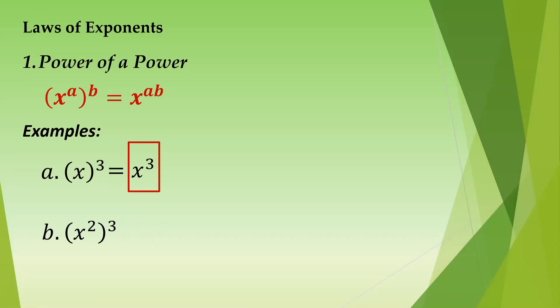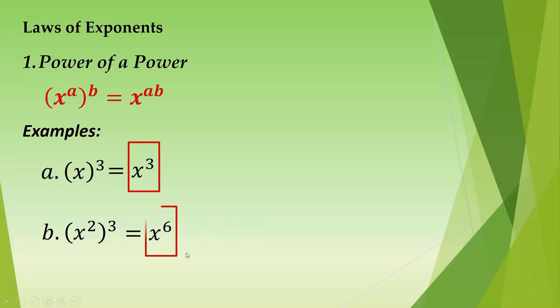Number 2: we have x squared, quantity cubed or raised to 3. Just like before, you multiply a and b. Your a here is 2 and your b is 3. So you have x raised to 2 times 3. Then we get x raised to 6. That is power of a power.